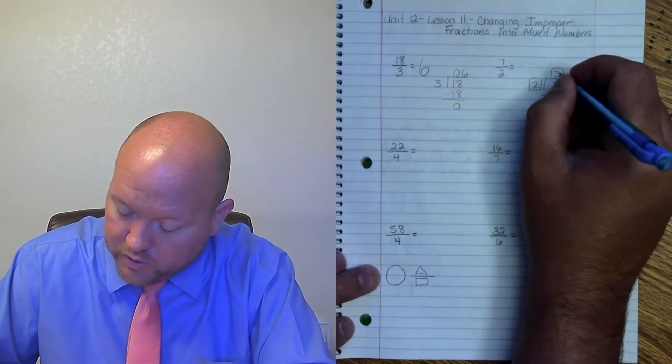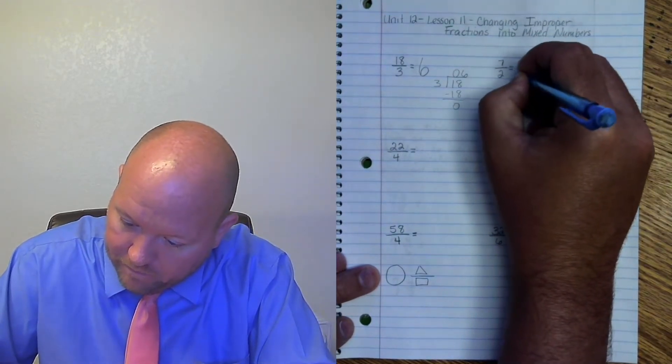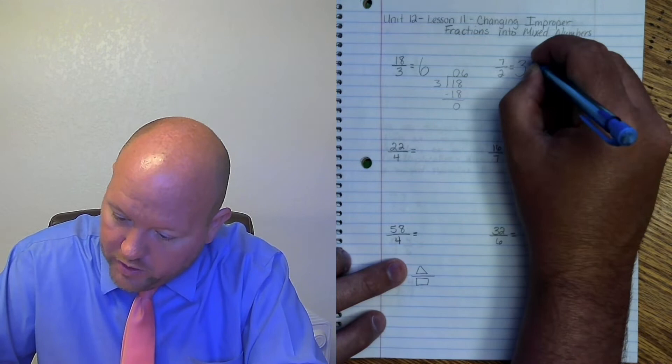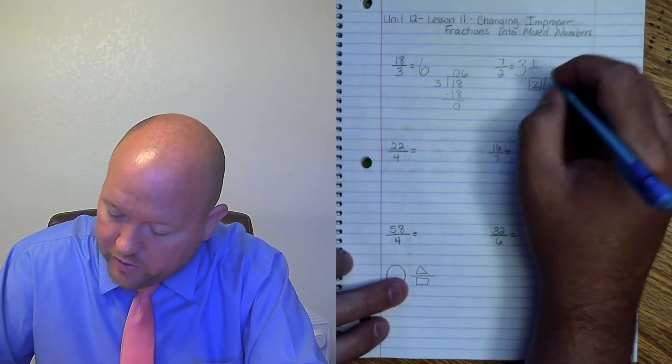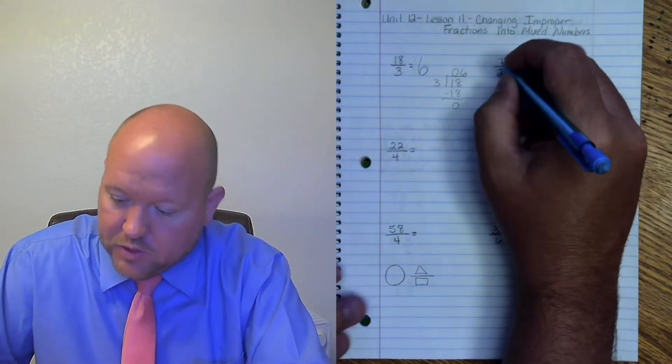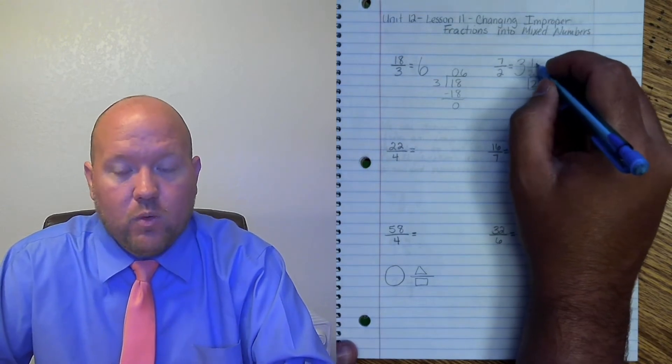So here what's in the circle is the 3. The triangle is a 1. And the box is a 2. So 7 halves equals 3 and 1 half.